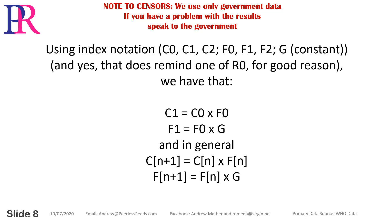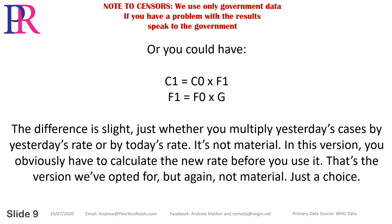In general, c at n+1 equals c at n times f at n, and f at n+1 equals f at n times g. Alternatively, c1 equals c0 times f1, where f1 equals f0 times g. The difference is slight — just whether you multiply yesterday's cases by yesterday's rate or by today's rate. It's not material; it's just a choice.